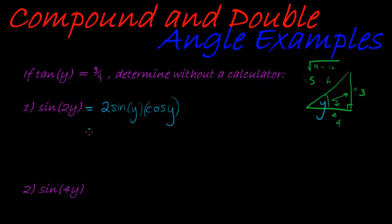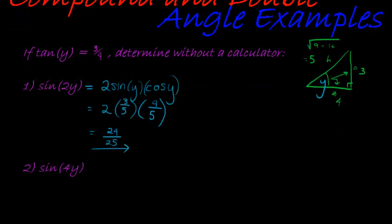And 2 sine y is opposite over hypotenuse, so that's 3 over 5, and cos y is adjacent over hypotenuse, which is 4 over 5. So, we have, without a calculator, what a simple question. 2 times 3 is 6 times 4 is 24 over 25. If tan y is 3 over 4, then sine of double that y is 24 over 25. Isn't that pretty?